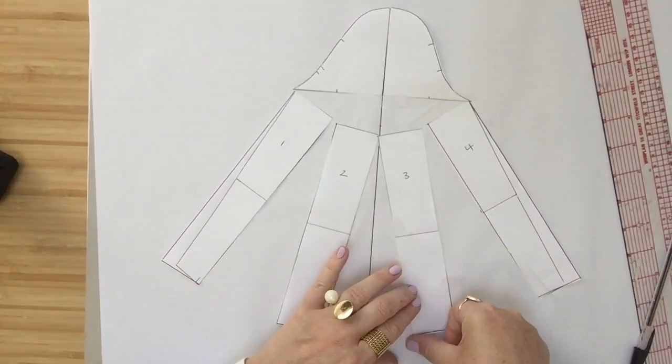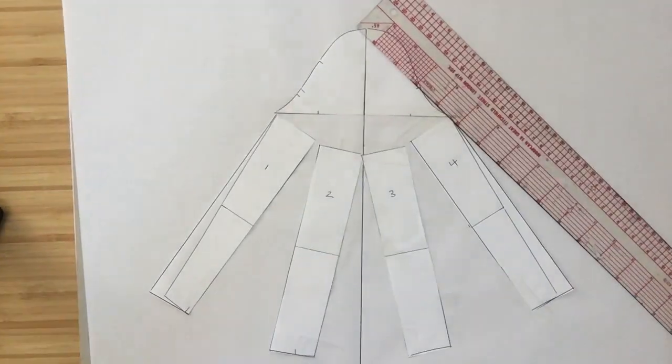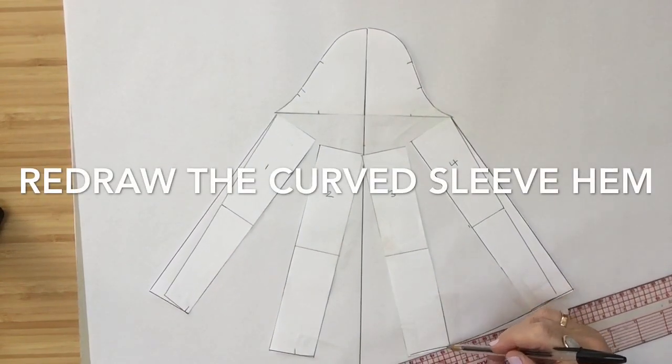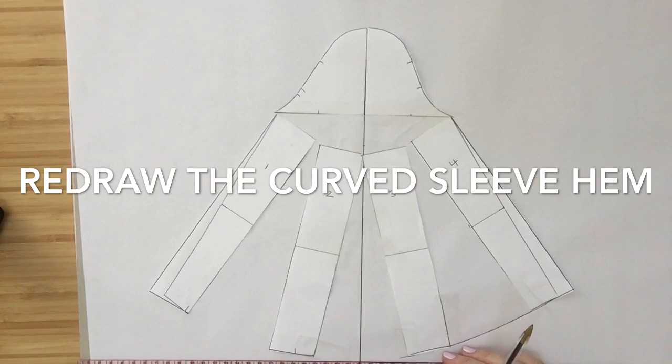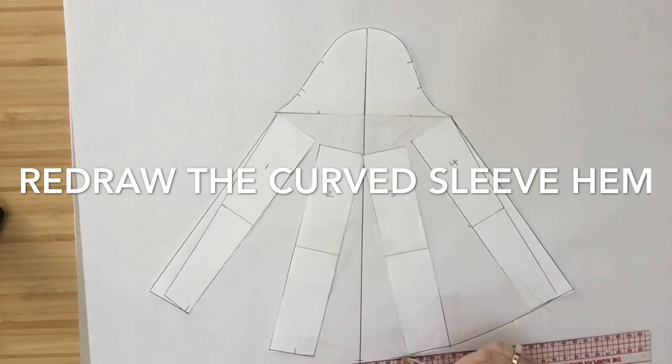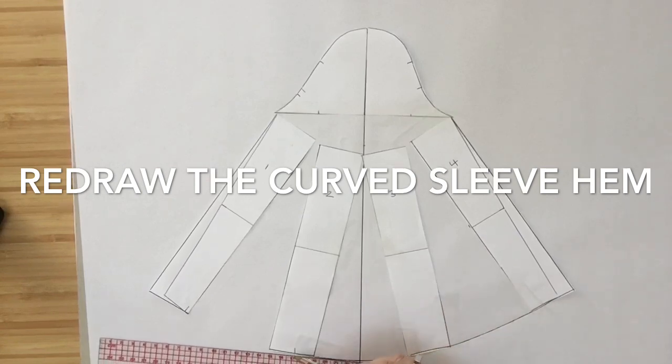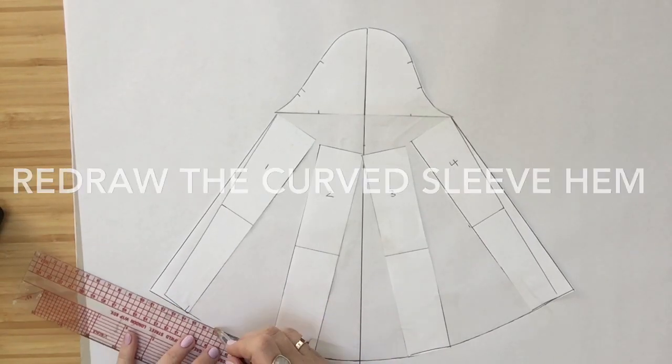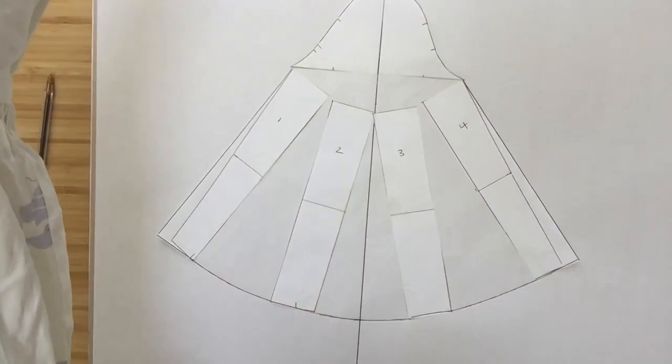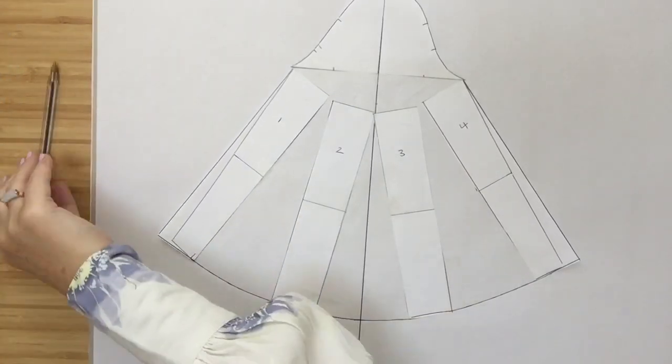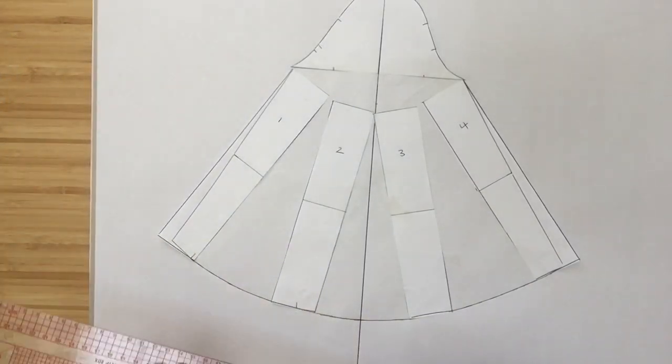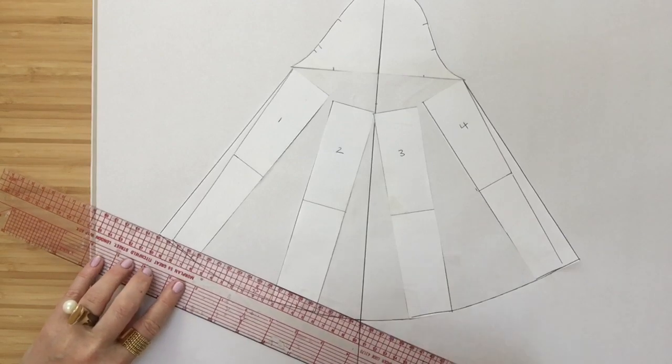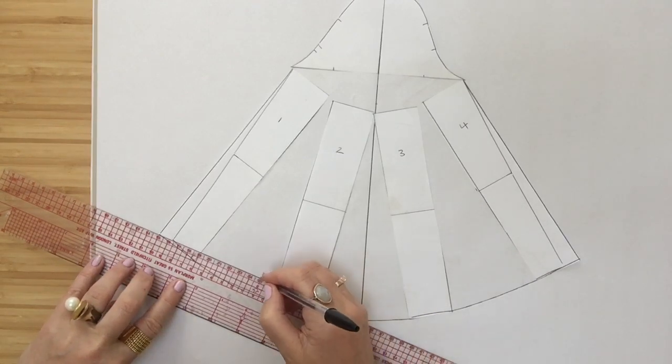You just need to worry about sections one and four touching to the cap. Then we need to redraw the curved sleeve hem. You can use your pattern master or a flexi curve if you have one to do this. This technique for adding volume evenly to just one area, as remember we didn't actually change the top of the sleeve, is called slash and spread. This is a technique you will come across time and time again in pattern cutting.